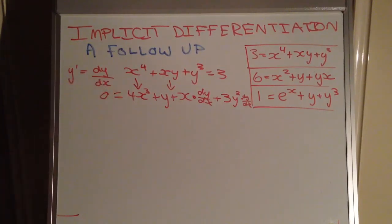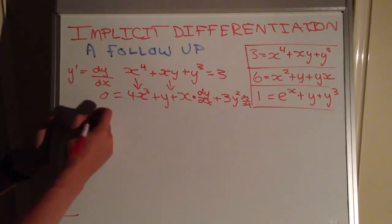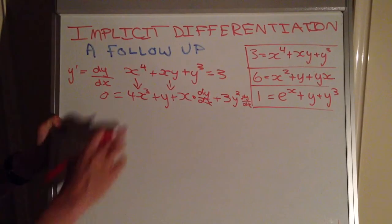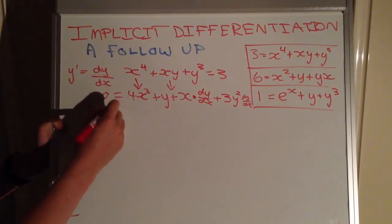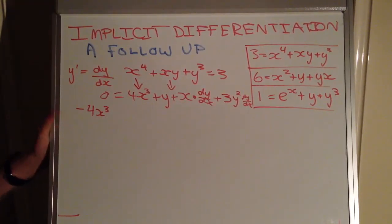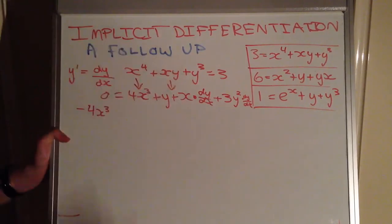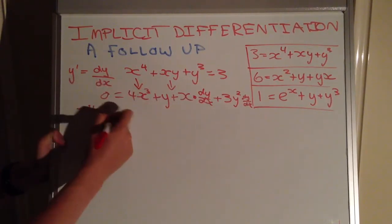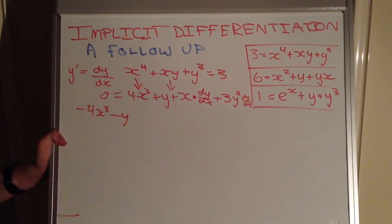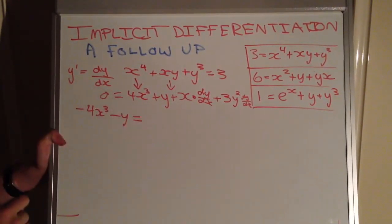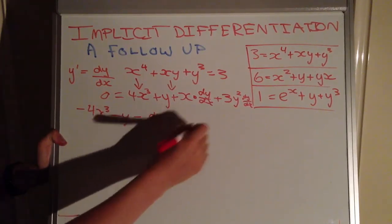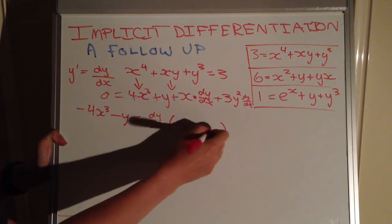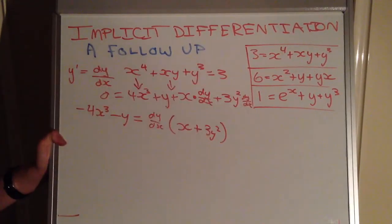And all of that equals 0 because the derivative of a constant is always 0. So now we gather our dy dx terms and leave them on one side of the equation, but move the other terms to the other side. So this positive 4x to the 3 is going to be negative 4x to the 3 because I'm moving it to the left-hand side. It's easier to keep the dy dx terms on the side they're already on. And then we subtract y as well because we have positive y there, move it to the other side and it inverses the operation. Then we have dy dx isolated as a common factor, and we have x plus 3y squared because that's what's left over when we take those dy dx's out.